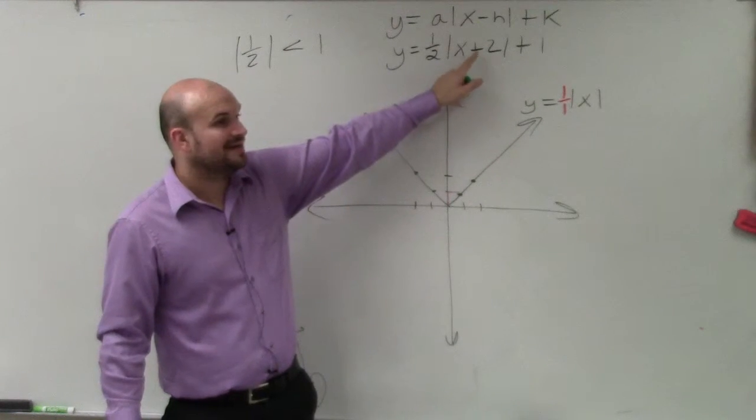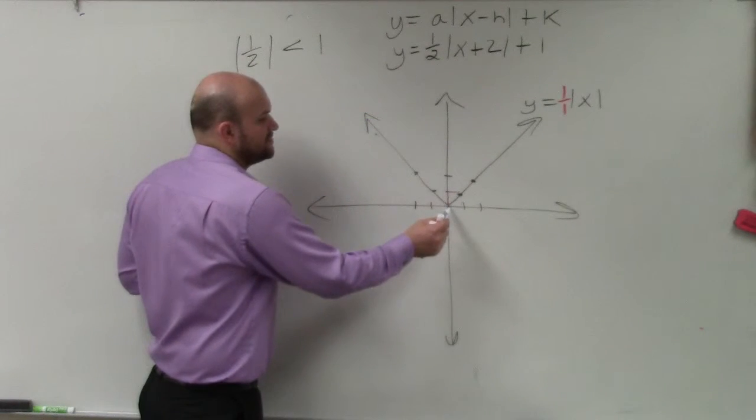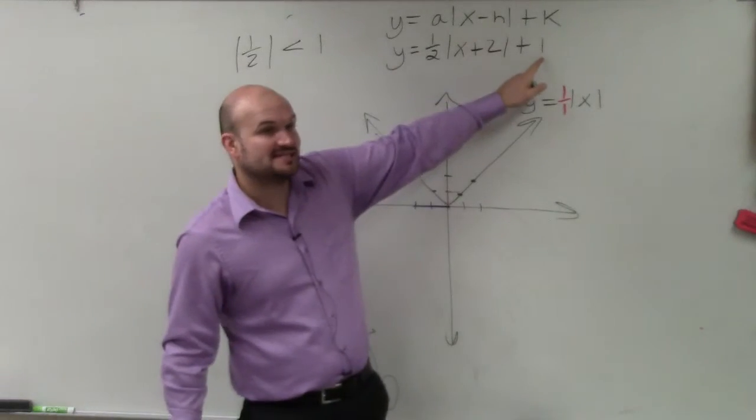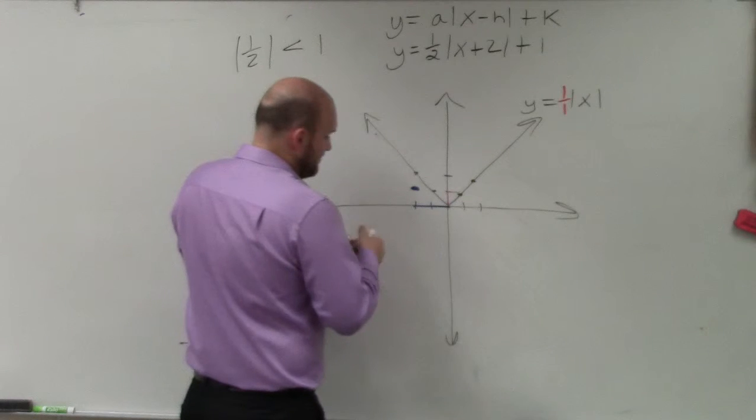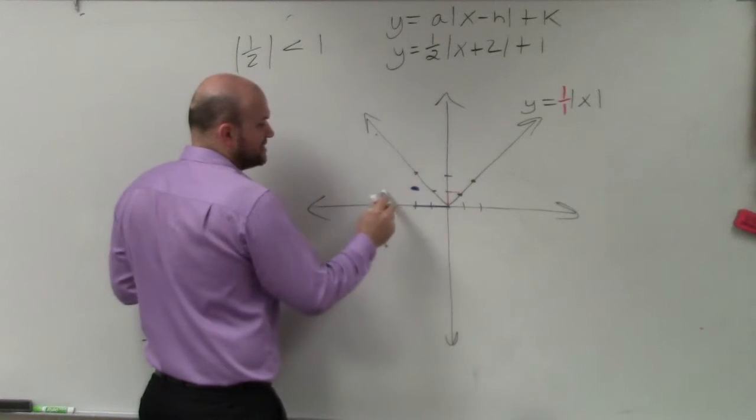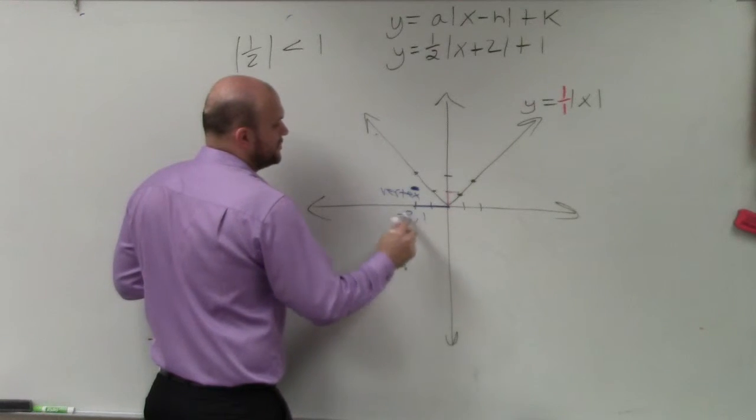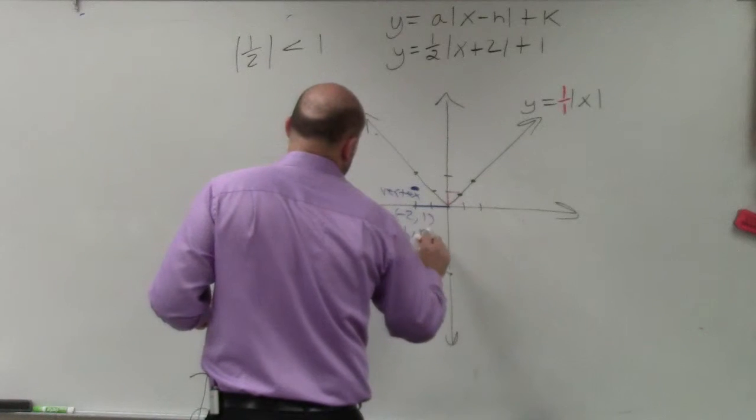Well, remember, h is always like the opposite. So x plus 2 is going to tell me to take my graph, shift it two units to the left. And k is going to tell me to shift my graph one unit up. So now, instead of my vertex being at 0, 0, I now have my vertex at the point negative 2, 1. And that is directly because of what the values are of h and k.